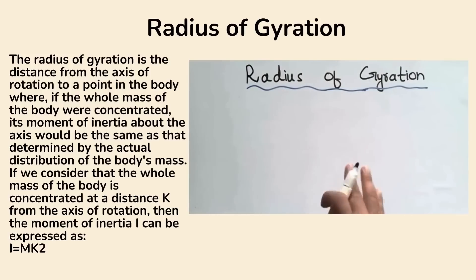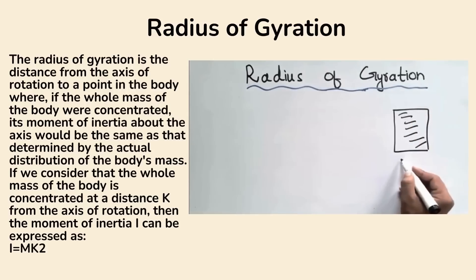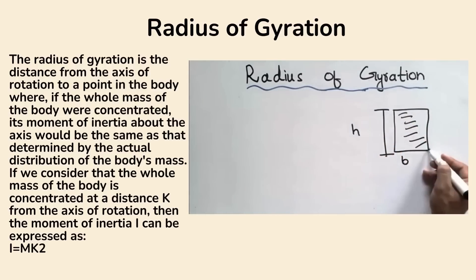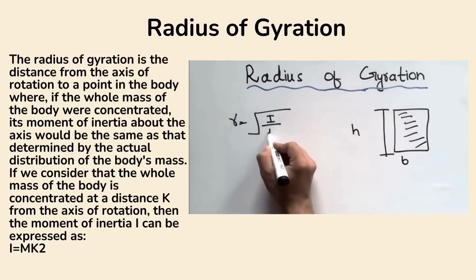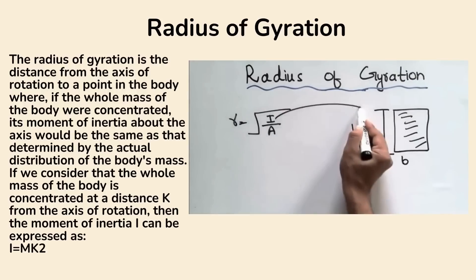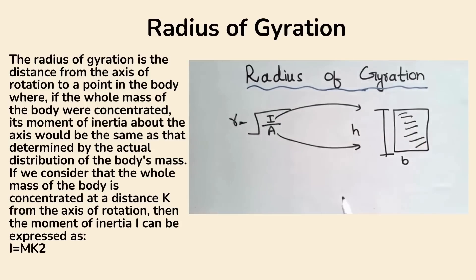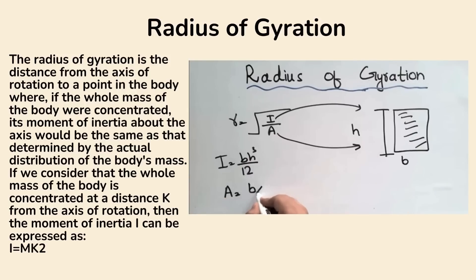This lecture is about the radius of gyration. I will show you how we find the radius of gyration of any object. Consider a rectangular cross-section of an object having width b and height h. We can find the radius of gyration by the formula: radius of gyration equals the square root of (moment of inertia divided by the area of the section). The moment of inertia of this rectangular section is given by bh³ divided by 12, and the area is b times h.